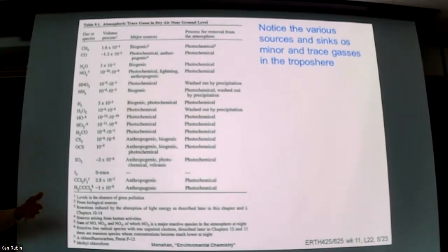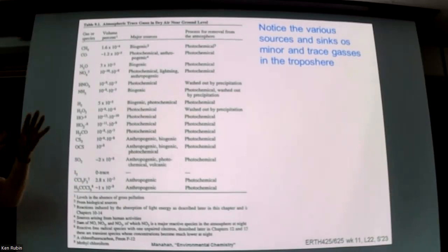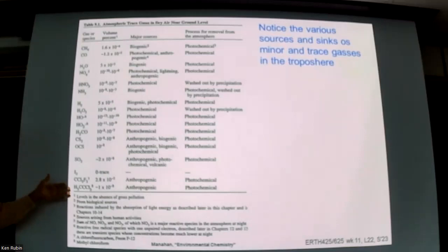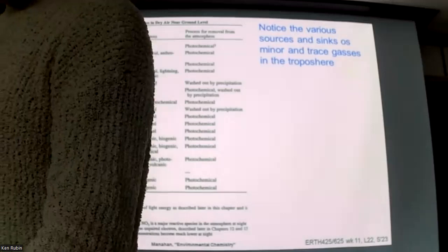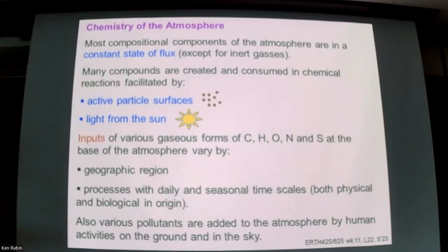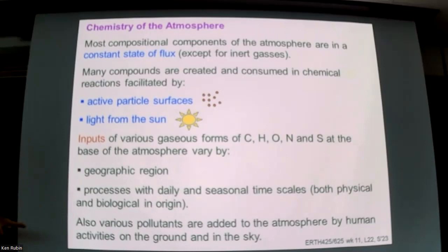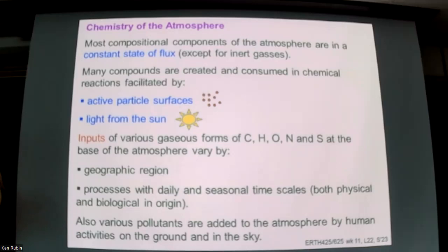The ozone layer has thinned and thickened and varied seasonally and geographically throughout our history. Adding these chemicals to the atmosphere upsets the balance of destruction and formation and promotes more destruction, causing additional thinning beyond what would naturally be present. In addition to ultraviolet light for photochemistry, particles are also really important — in the rarefied atmosphere, molecules that could react need occasions to come together, and a lot of chemistry takes place on small particles.